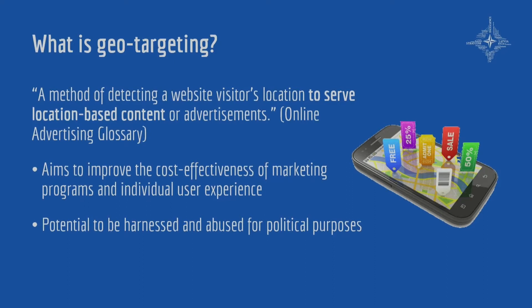So what exactly is geo-targeting? Geo-targeting is a method of detecting a website visitor's location to serve location-based content or advertisements. Those of you who are not based in Riga might have already experienced some form of geo-targeting while scrolling through your Facebook feed. You may have received an ad for the food delivery app Vault or Yandex Taxes, and that is entirely based on the fact that you are here right now. Geo-targeting aims to improve the cost-effectiveness of marketing programs as well as individual user experience. It relies on the belief that understanding a user's location will help companies deliver the right message at the right time.